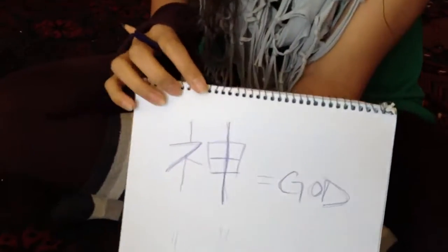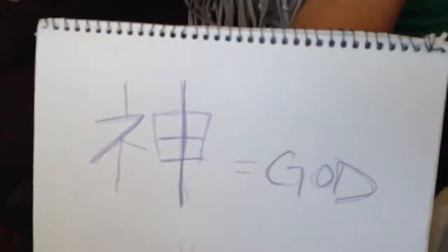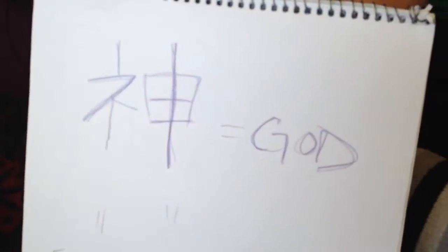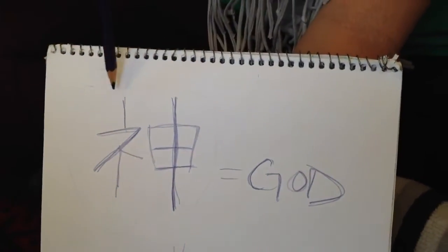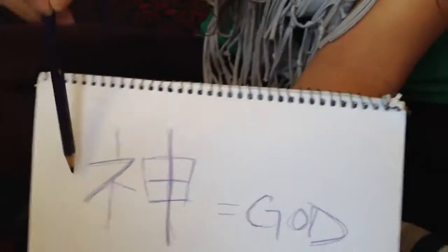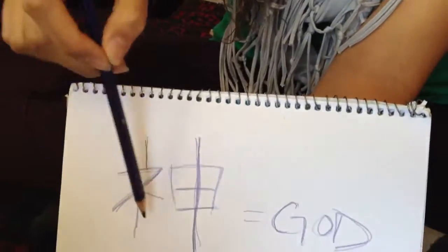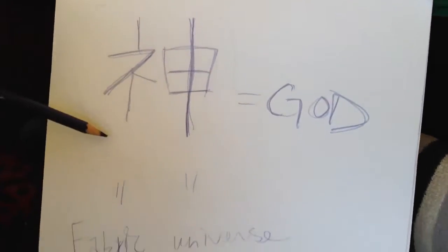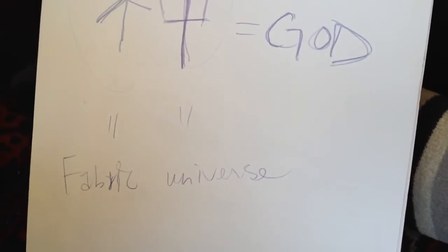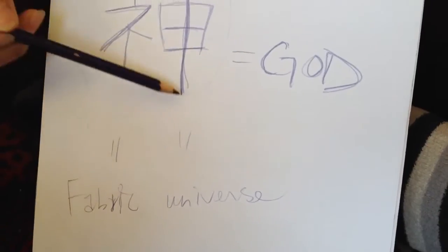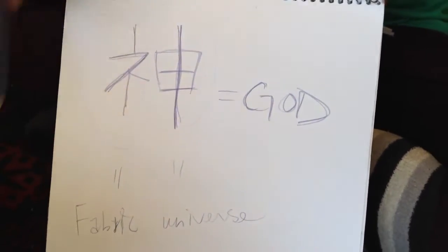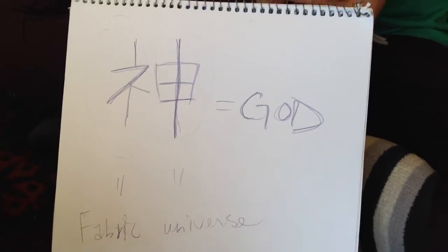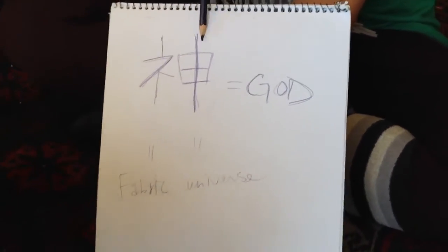In Chinese characters, this symbol means 'God.' If you break it up to see what each symbol means: this symbol means 'always point to clothing' or also 'fabric,' and this symbol means 'universe.' Together: God. The fabric of the universe is God.